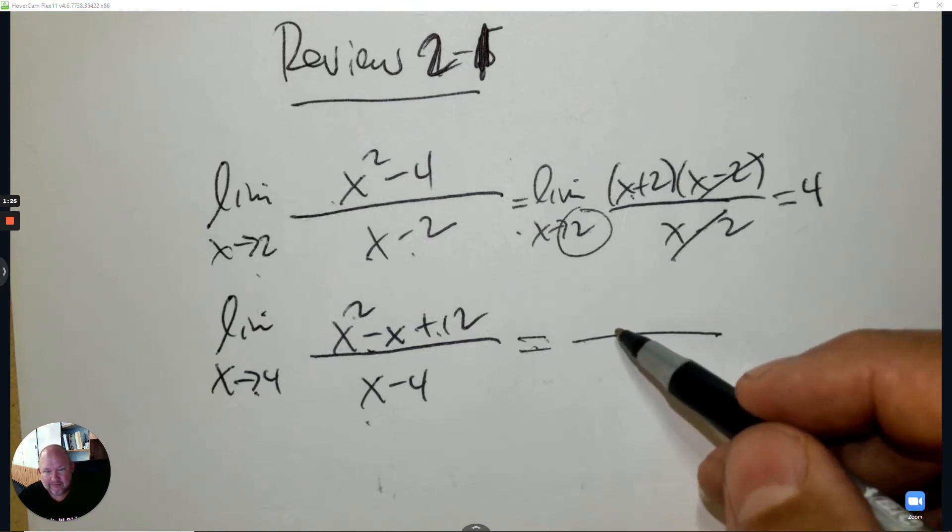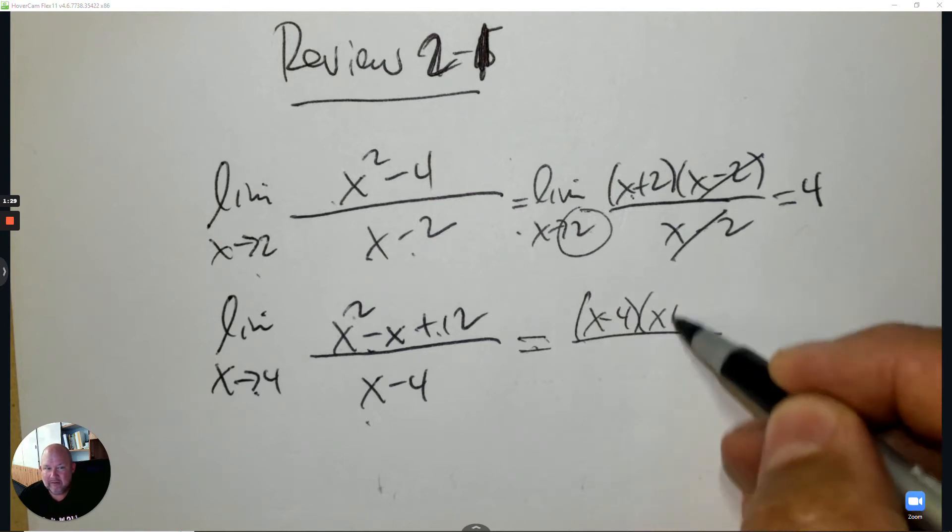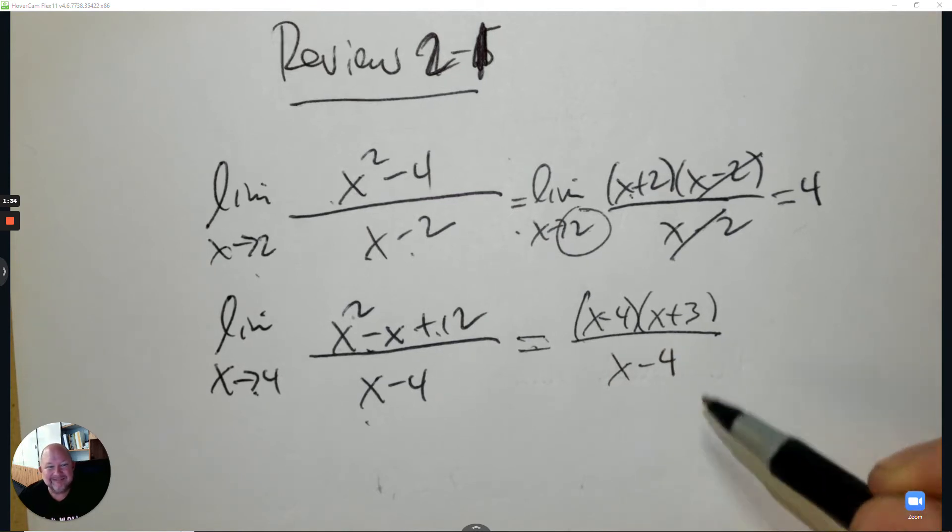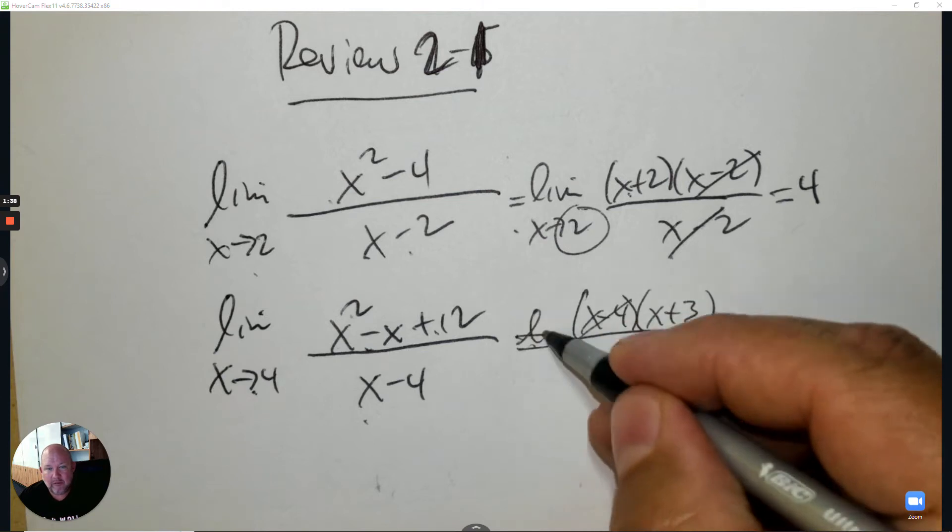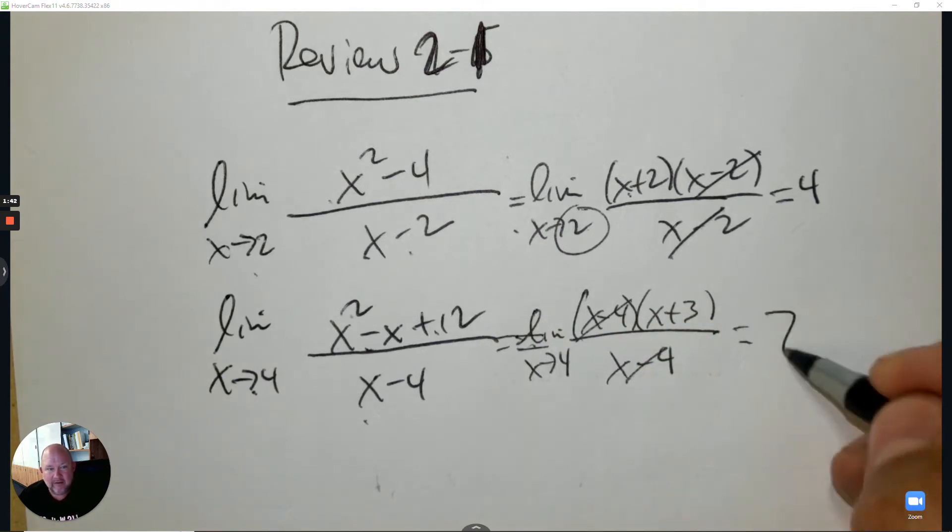What did I do wrong? This should be like this, and this removes, then you plug in. I should always remember the limit notation when you do that. You can see the answer is 7.